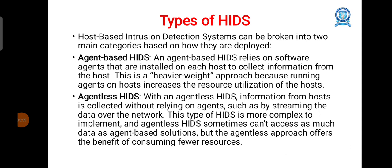There are two types of HIDS: agent-based HIDS and agentless HIDS. Agent-based HIDS uses software agents that are installed on each host to collect information from the host. This is a resource-intensive approach because running agents on the host increases its resource utilization. Agentless HIDS works on a system without using any software agents; instead, it works by streaming data over the network. This type of HIDS is more complex to implement and sometimes cannot access as much data as agent-based solutions.